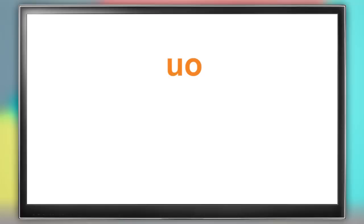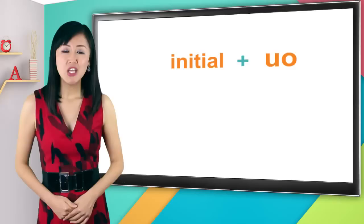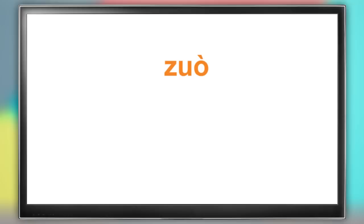So these are pronounced as po, po, mo, fo, get it? When it stands alone, it's spelled as wo, w-o. For example, I or me in Chinese is wo with the third tone, wo.